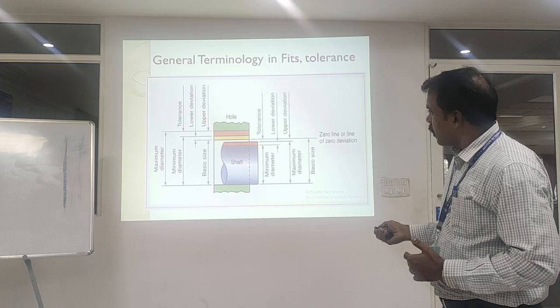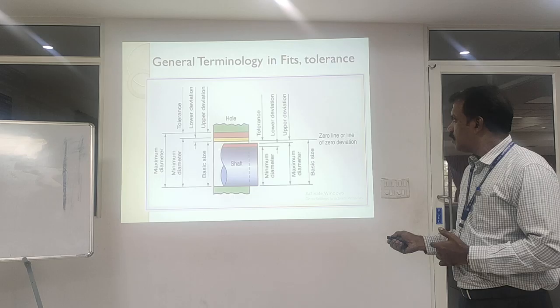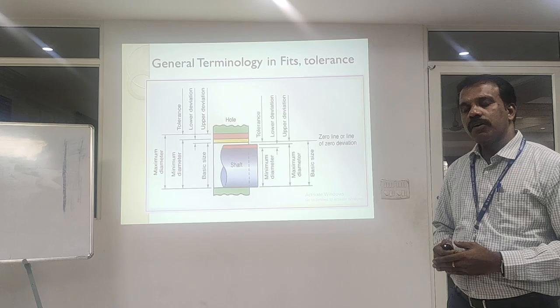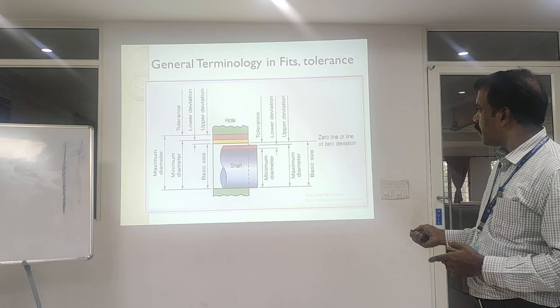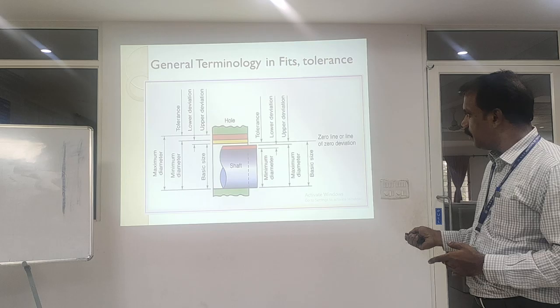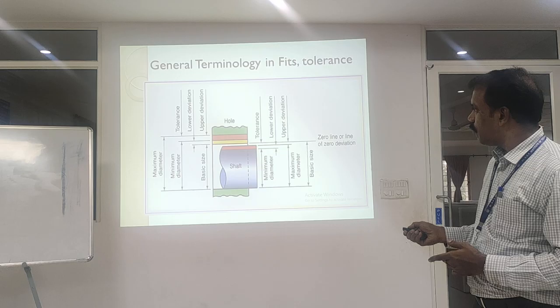Coming across this, you have different terminologies. The first one is the diameter, then the upper limit or the lower limit, and then you will see tolerance and limits. In the case of a shaft, you have two things: one is the maximum diameter allowable, and the other is the minimum diameter possible.